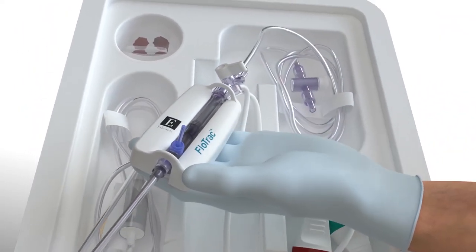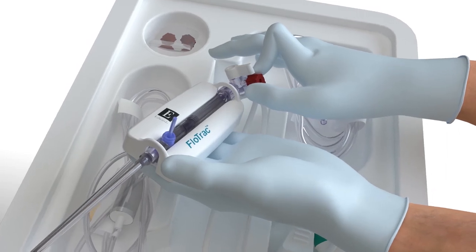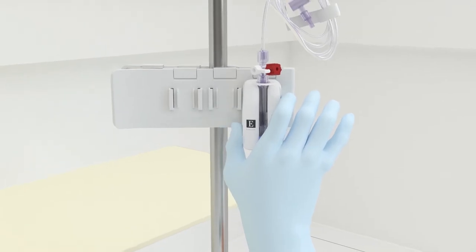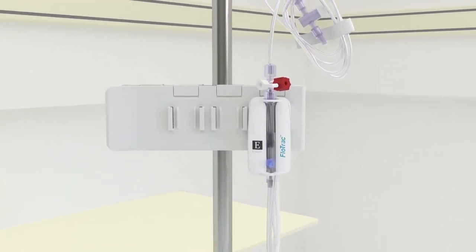Replace all caps with non-vented caps and ensure that all connections are tight. Mount the FlowTrack sensor on an IV pole using the appropriate holder.